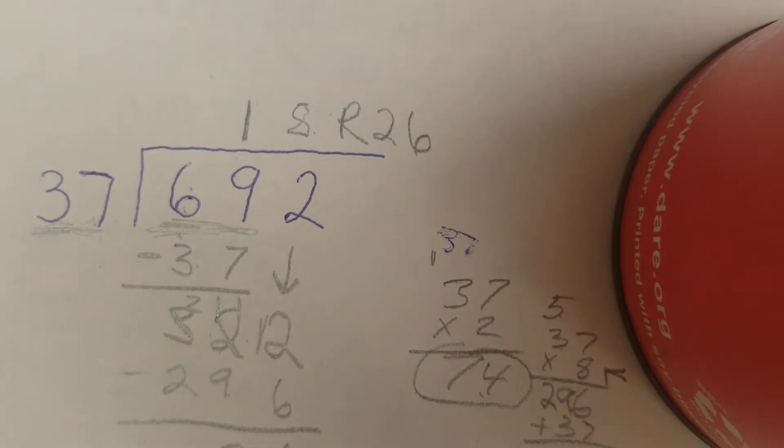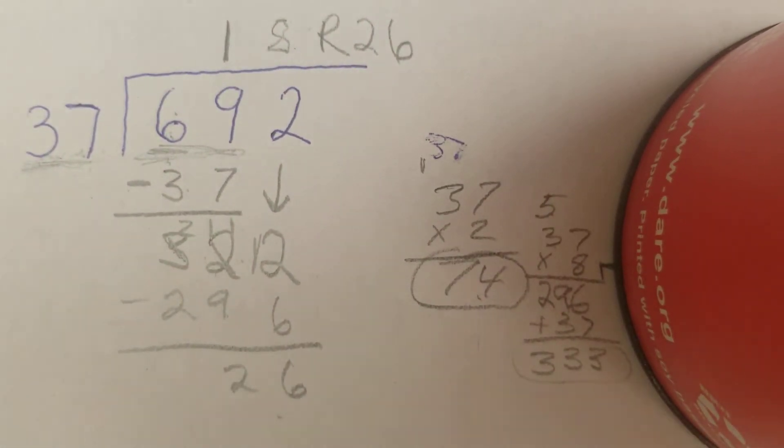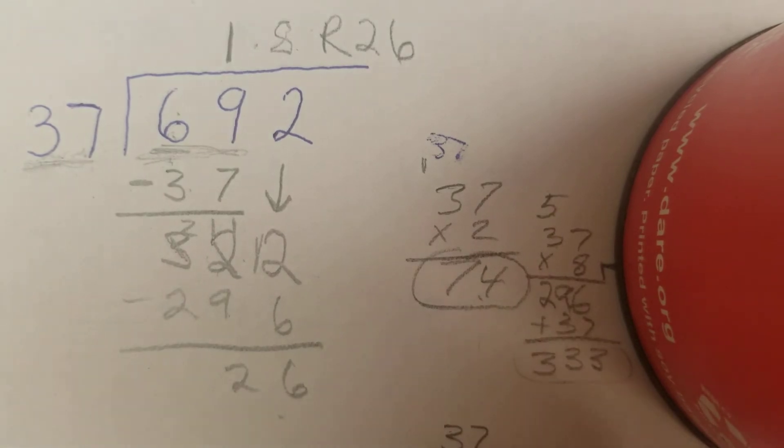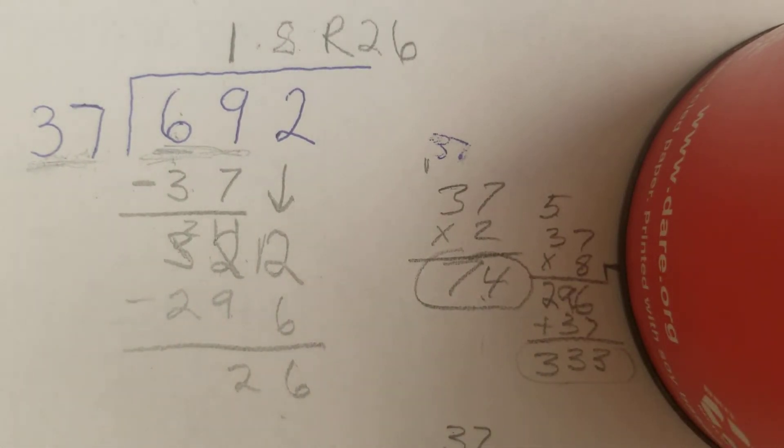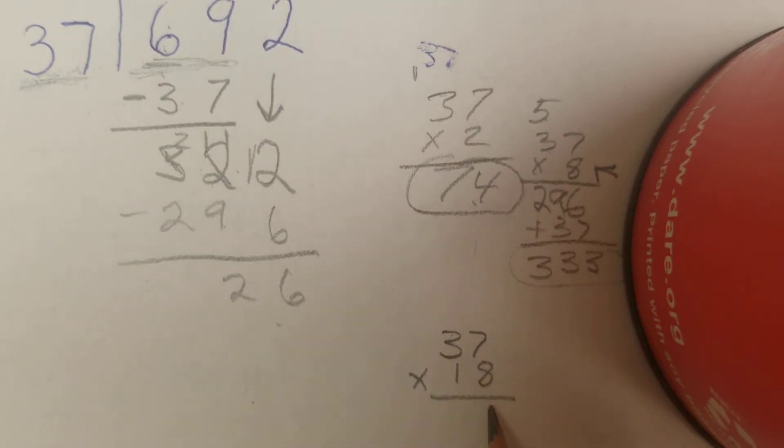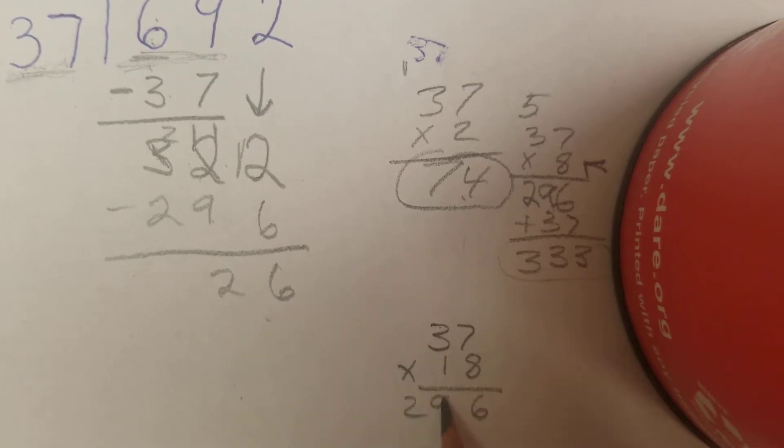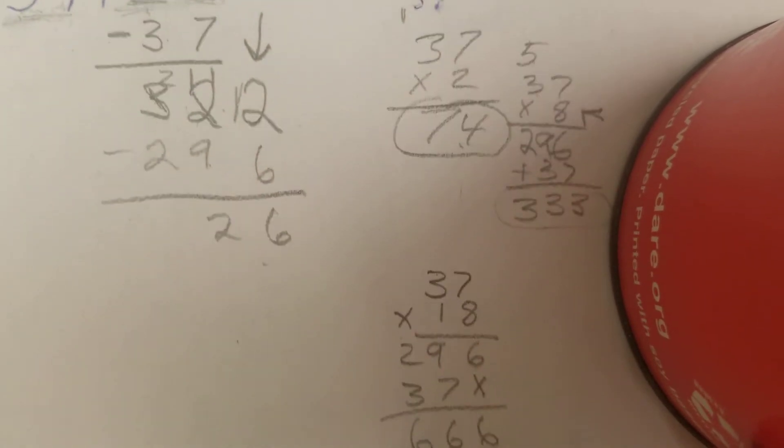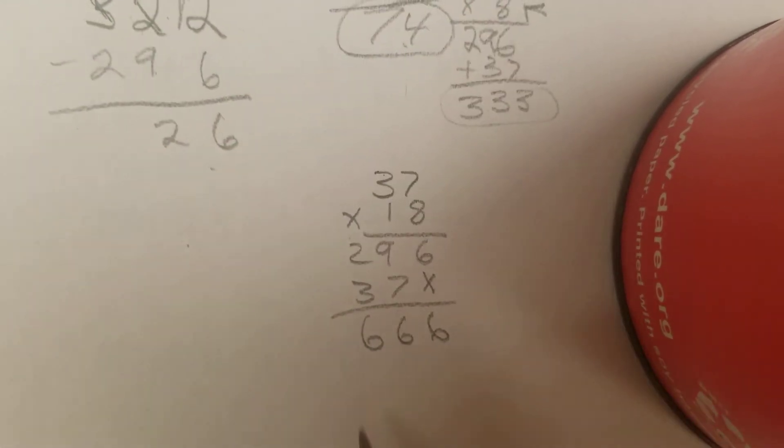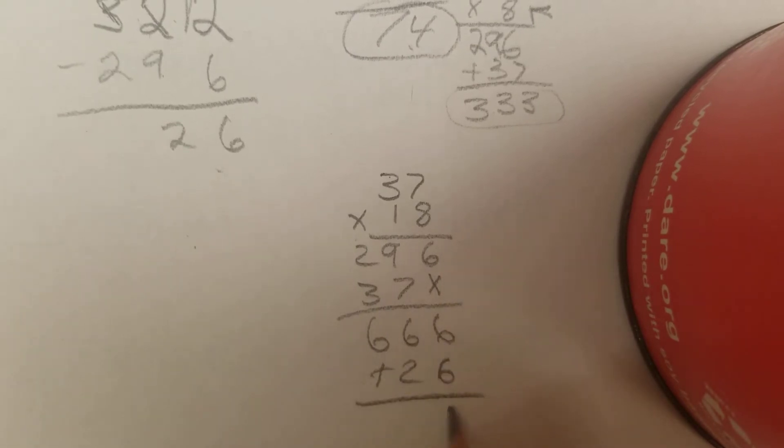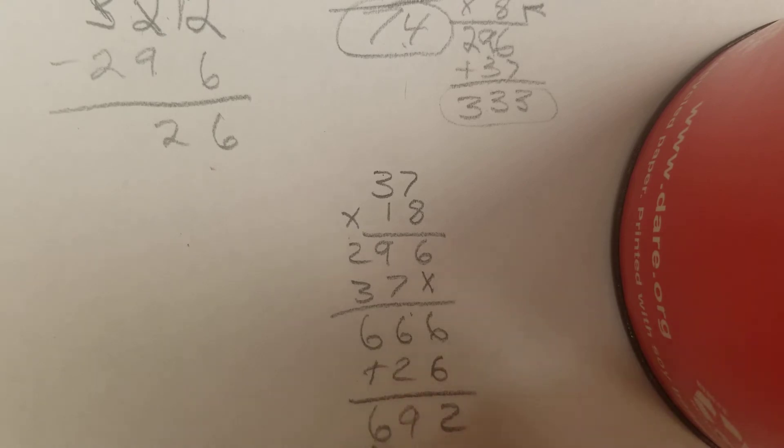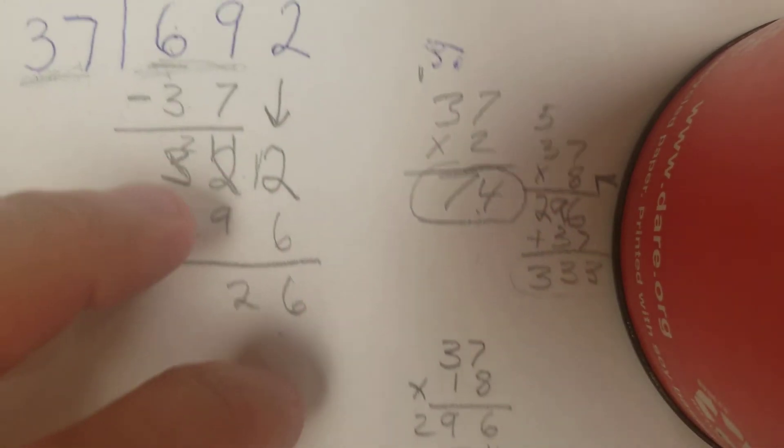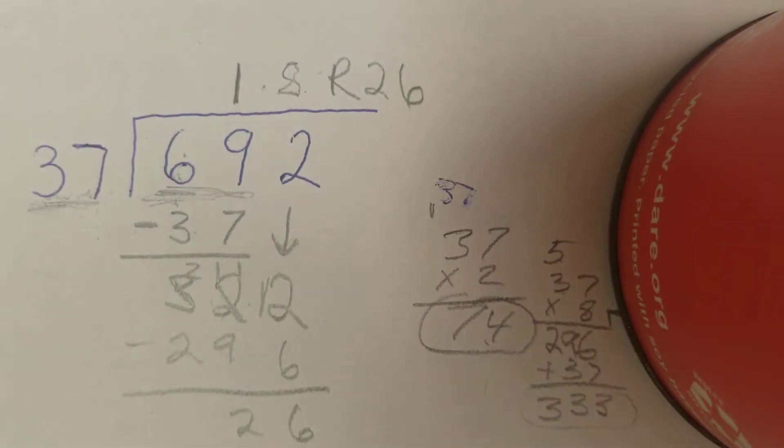To check this, we can take 18 times 37. That would be 56, 24, 29. This would be 37. Add, carry my 1. Then I'm going to add in my remainder of 26. 6 plus 6 is 12. 7, 8, 9. 692 would be my answer. As you can see, 692 is what we started with. So 18 remainder 26 is correct.